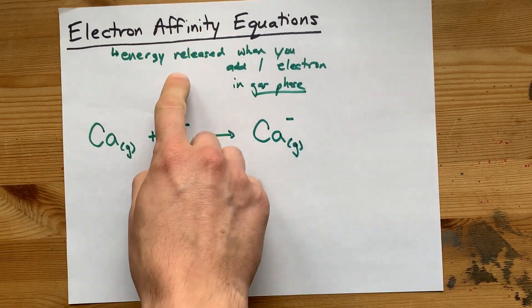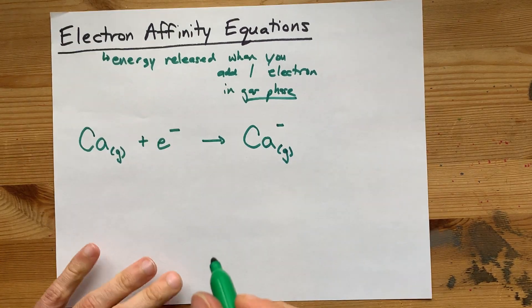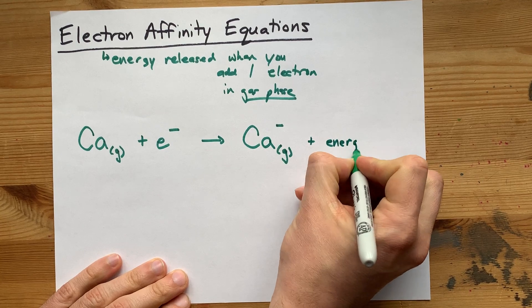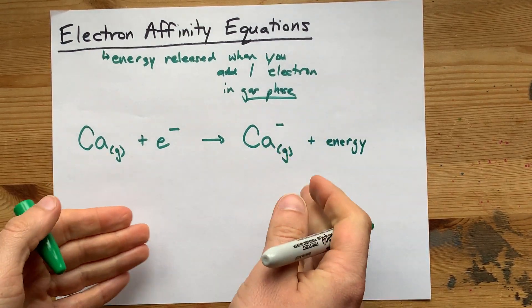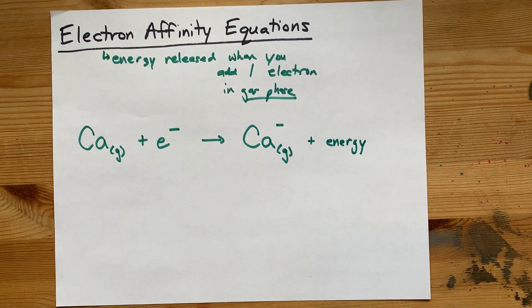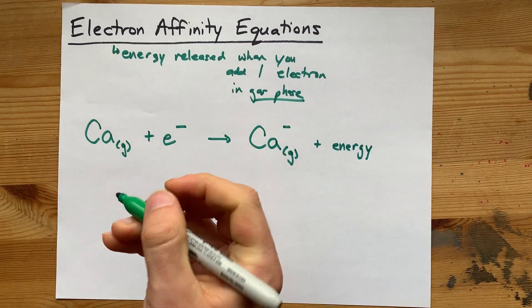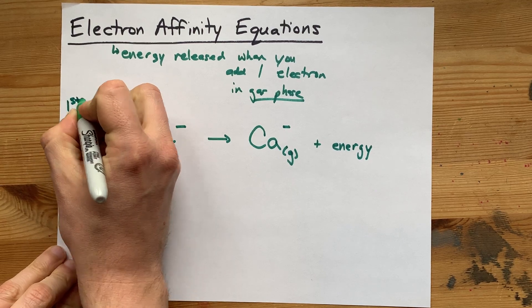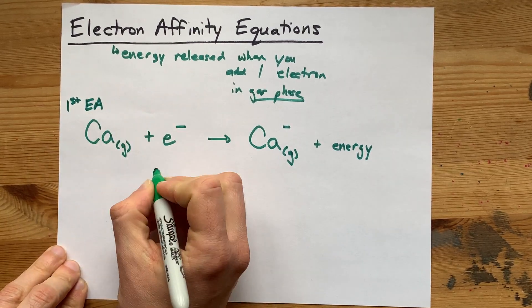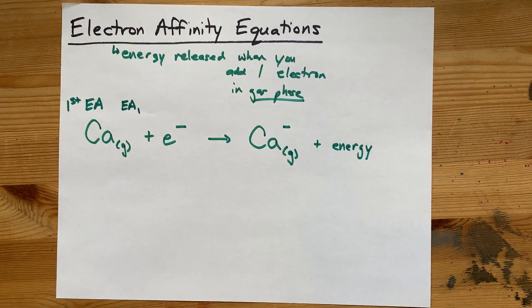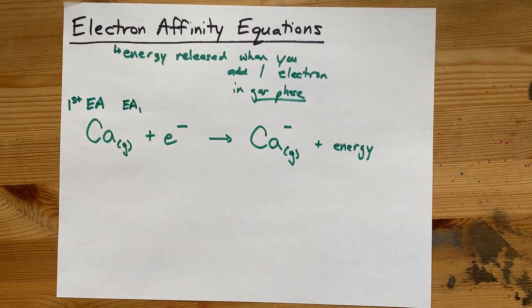Now, electron affinity is generally energy released, and so you can get away with writing plus energy here, which implies that energy is a product of this reaction. This is the chemical equation for the first electron affinity. Some teachers will call it EA and put a little one down there. Get it? First electron affinity.